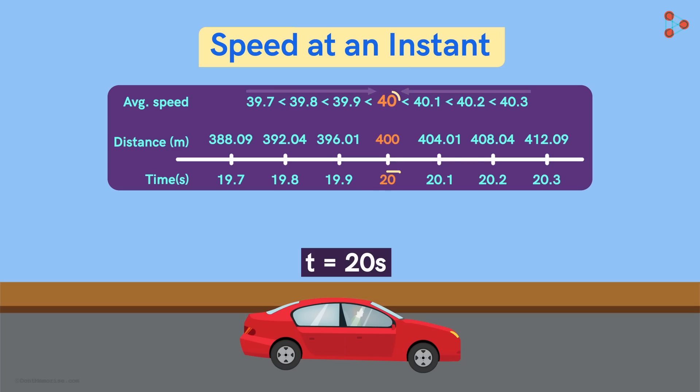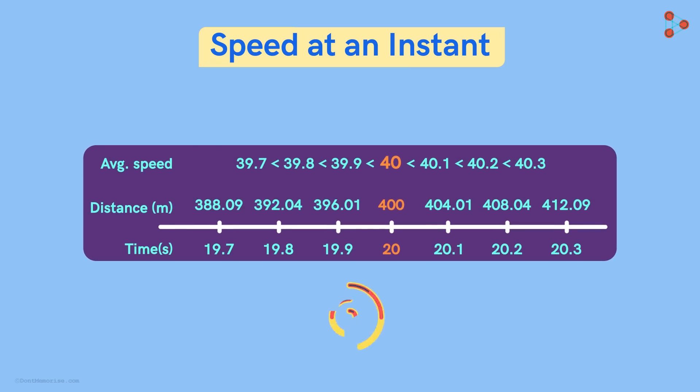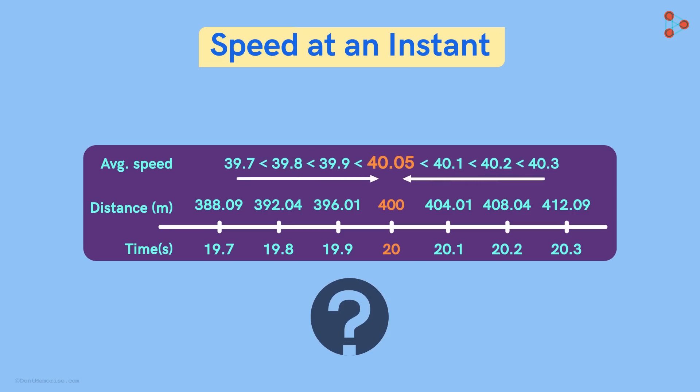But let me ask you a question. How do we know for sure that these two sequences approach 40 and not 40.05 or any random number between these two numbers?